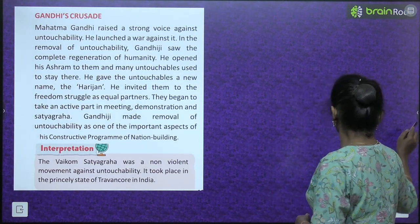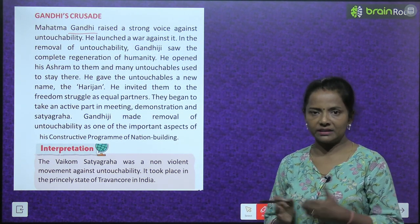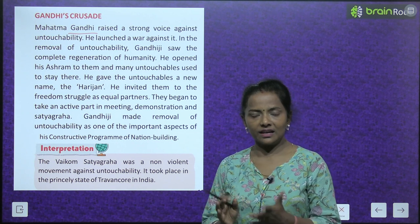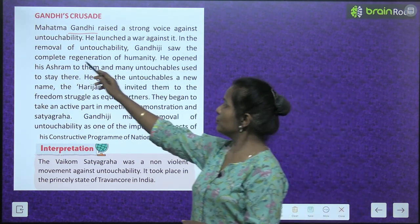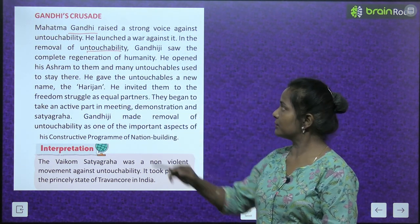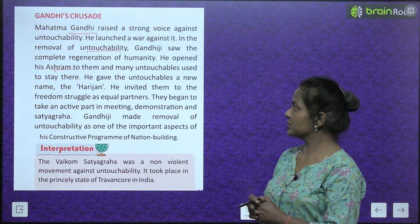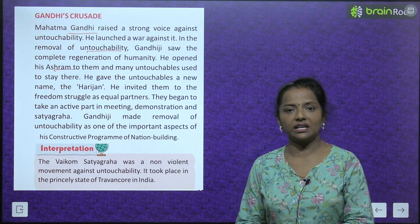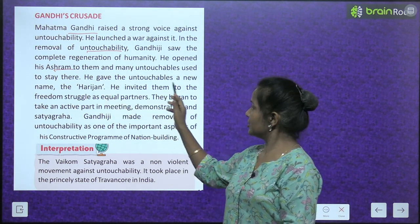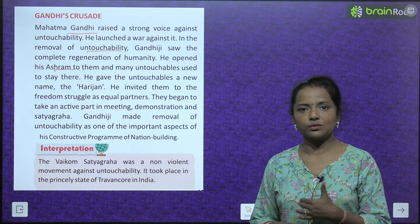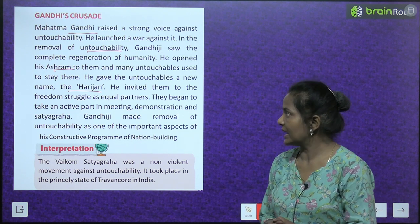Gandhiji's crusade. Mahatma Gandhi raised a strong voice against untouchability. He launched a war against it. In the removal of untouchability, Gandhiji saw the complete regeneration of humanity. He opened his ashram to them and many untouchables used to stay there. He gave the untouchables a new name — Harijans. He invited them to the freedom struggle as equal partners.